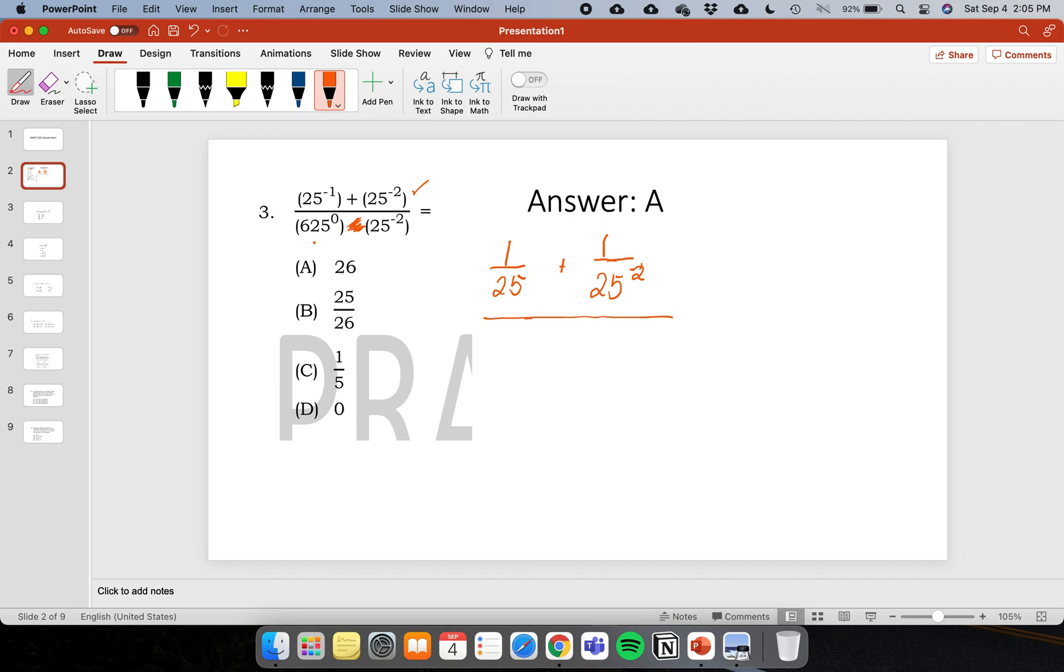Divided by any number that is raised to zero will always be one times one over 25 raised to two.